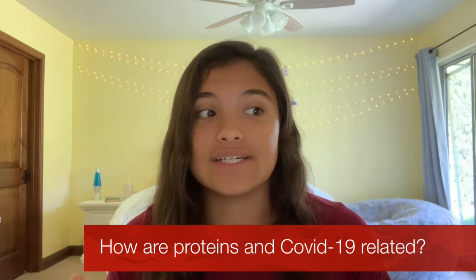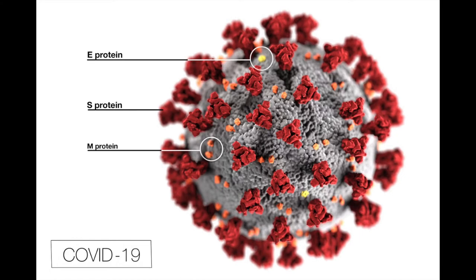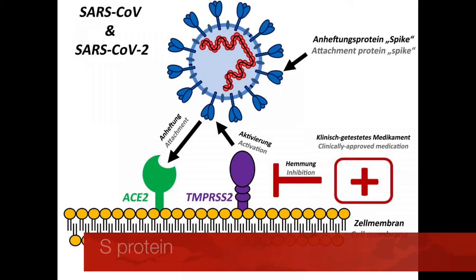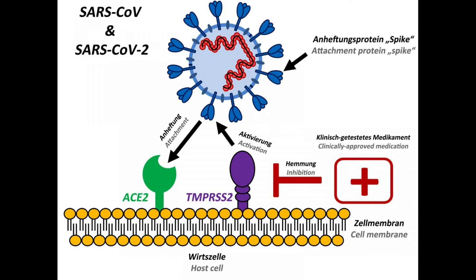How are proteins in the coronavirus related? There are four different proteins on the coronavirus structure: the S protein, the E protein, the M protein, and the N protein. These all have different functions that make the coronavirus what it is. Let's first analyze the S protein, or the spike protein. In all of our lungs, hearts, and kidneys, we have an ACE2 enzyme — the ACE2 enzyme stands for angiotensin-converting enzyme receptor 2. This enzyme easily accepts the coronavirus into our bodies, and the S protein has a receptor-binding domain that attaches to ACE2.